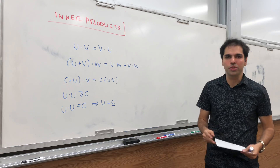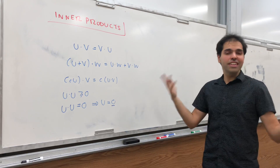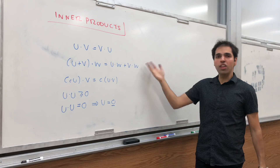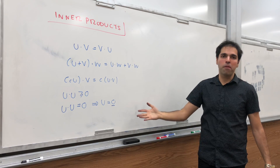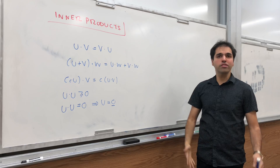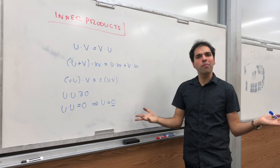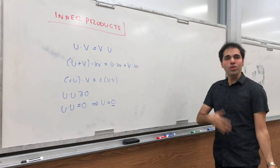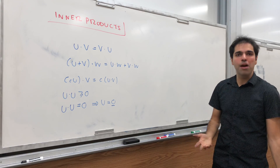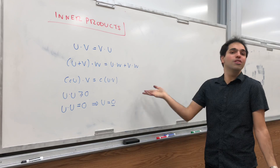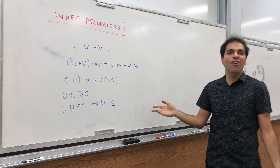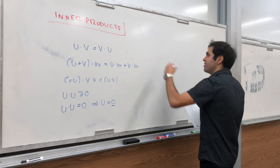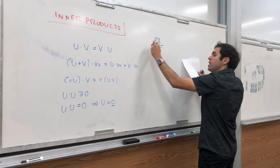You may not have thought of it this way, but those are really the only properties you use. An inner product space is simply a vector space with a dot product satisfying all those properties. In other words, let's forget everything we know about dot products except those axioms. Today I'll give you some examples and show you they're not too different from what we've done so far.